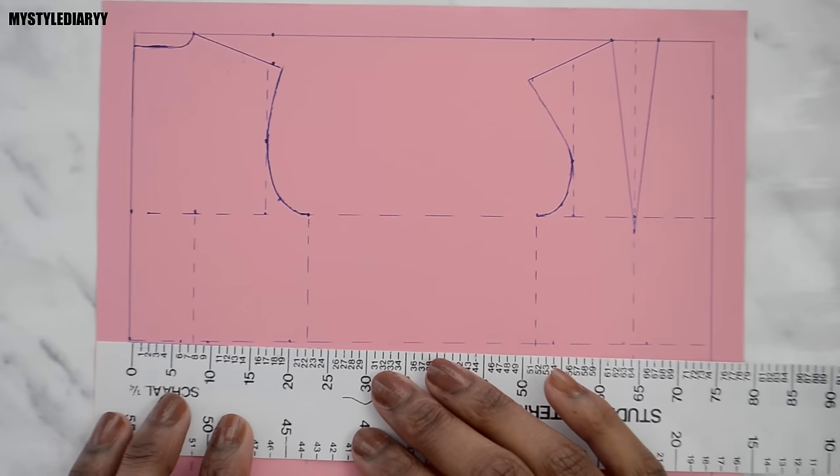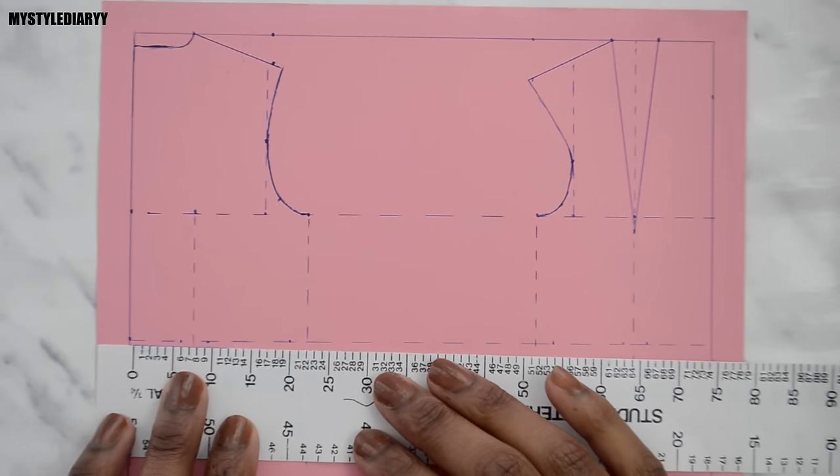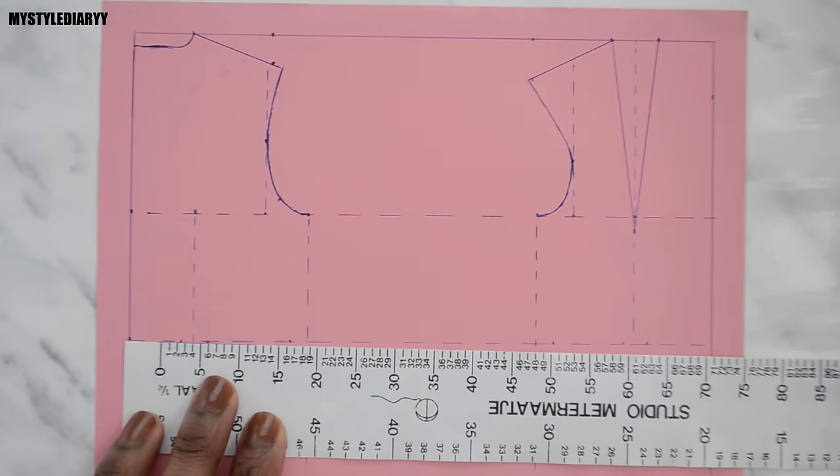To double check if you did it correctly you can measure the waistline and multiply the measurement by two.